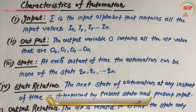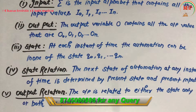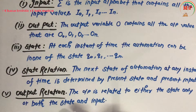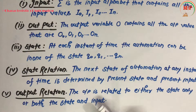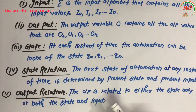The fifth point is output relation. The output relation depends either on state only, or on both state and input. Output ka relation ya toh state par depend karega, ya toh state aur input dono par depend karega. That is the characteristic of automation.